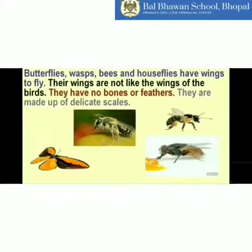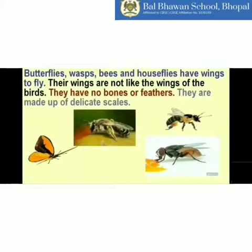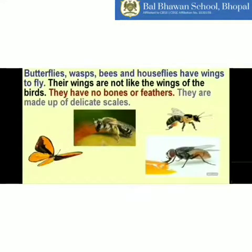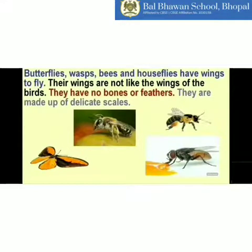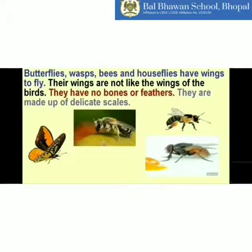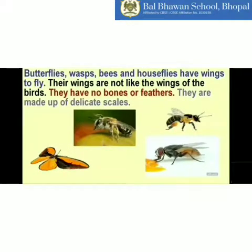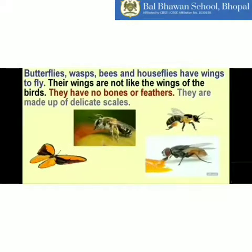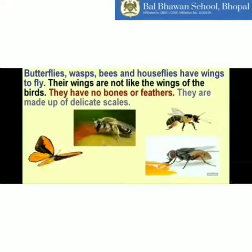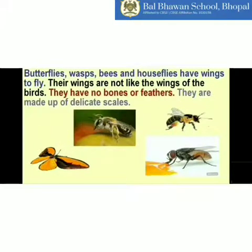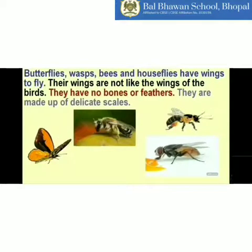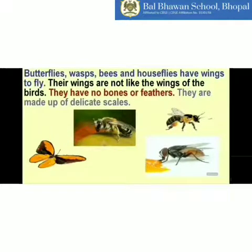Butterflies, wasps, bees, and house flies also have wings to fly. But their wings are not like birds' wings — they don't have bones and they don't have feathers. These wings are made up of delicate scales, and their bodies are very light, so they can easily fly with the help of these wings.